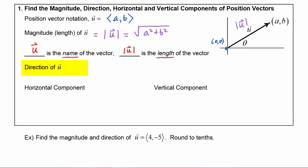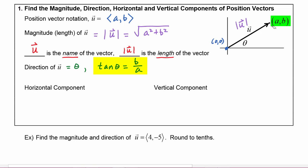The direction of vector u is given by theta. Applying our trig definitions, we know that the tangent of theta equals b over a, because it's always the y value divided by the x value. The convention with vectors is that theta will be in the interval zero degrees to 360 degrees, so we give our answers as positive angles from 0 to 360.